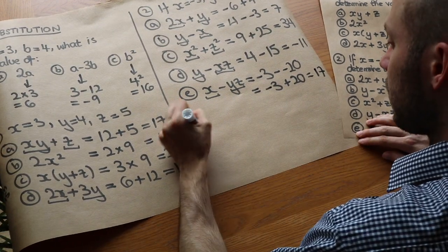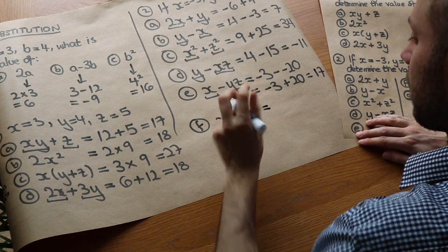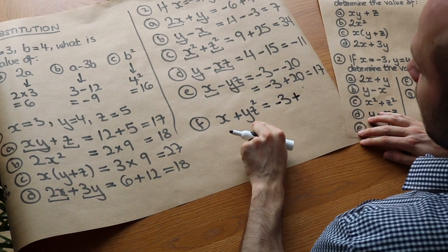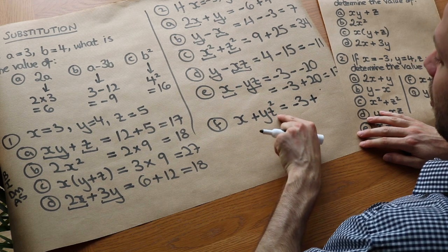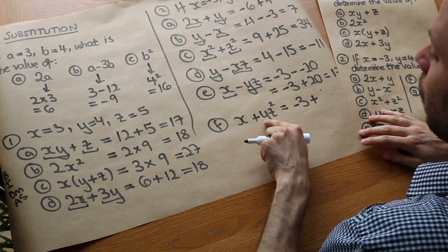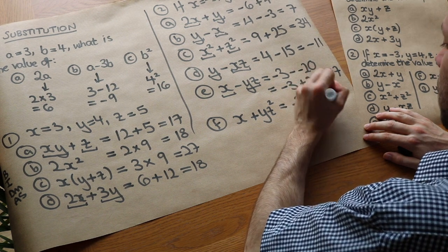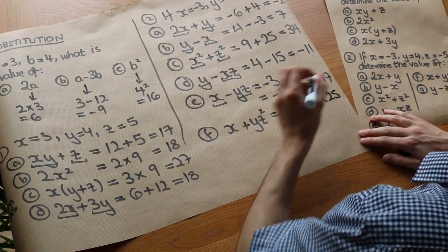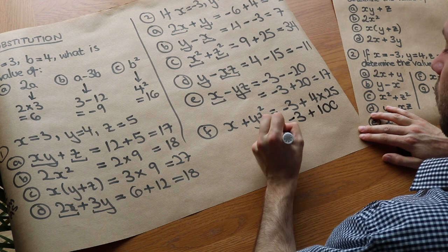A few final ones. We've got f: x plus yz squared. x is minus 3, plus, and notice by BIDMAS the power comes first: it's the z that's squared first and then you're timesing it by y. So it's y times z squared. That's 4 times z squared — minus 5 squared is 25, positive 25. 4 times 25 is 100, so that gives us minus 3 plus 100, which equals 97.